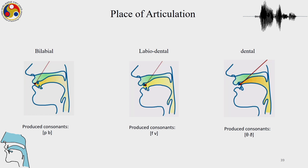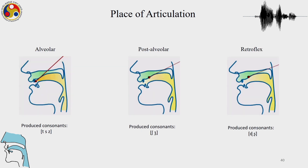Let us play these short videos of places of articulation so that we again see the basic differences between the places of articulation. This is a bilabial sound — lips coming together. This is the labiodental with the lower lip touching the upper teeth. The dental sound where the tip of the tongue or the tongue blade touches the teeth. The alveolar where we have the tongue tip or tongue blade touching the alveolar region, and here the target is the post-alveolar region and the retroflex where we see the curling very clearly.